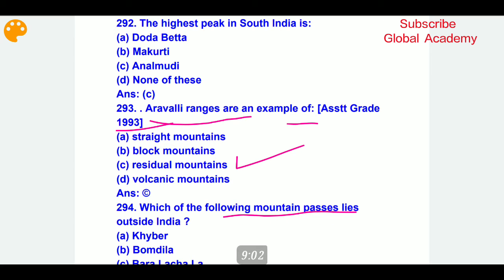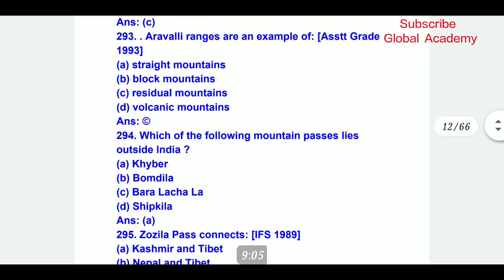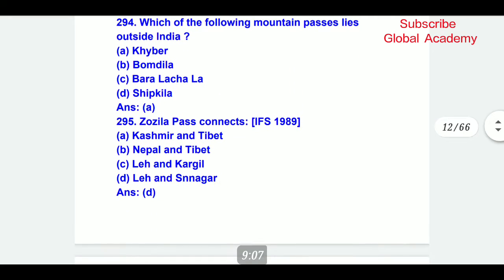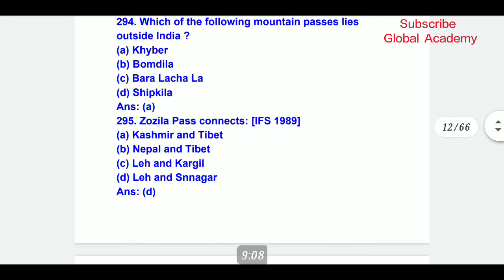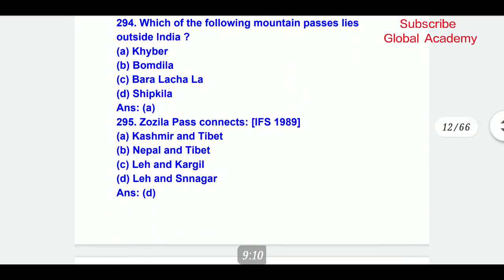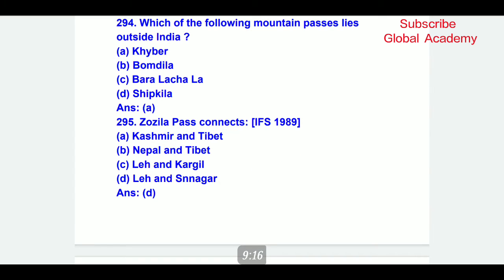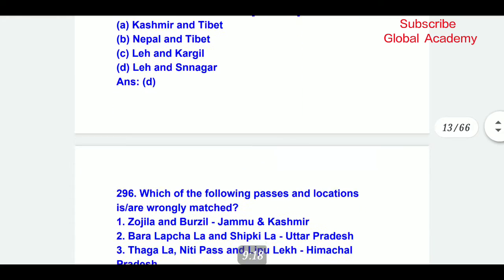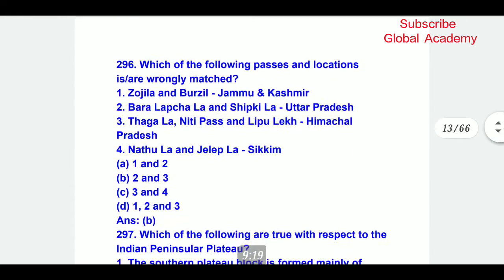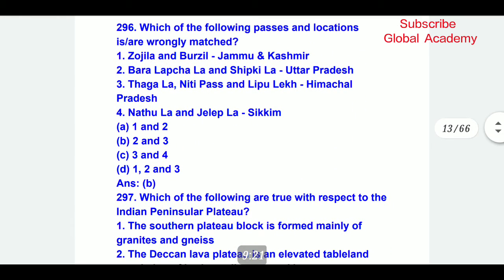Khyber Pass lies outside India. Zojila Pass connects Leh and Srinagar. Some Khyber passes and their locations are wrongly matched — B part, options 2 and 3, are wrongly matched.